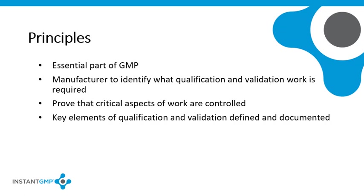Manufacturers should identify what validation and qualification work should be done. All systems, equipment, processes, and procedures should be reviewed, and the manufacturer should decide what qualification and validation work needs to be performed. The intention is to prove that all critical aspects of the work are controlled and performed as required. Validation and qualification work must be documented.